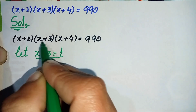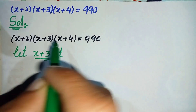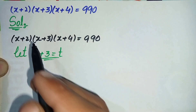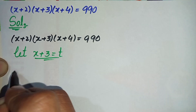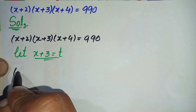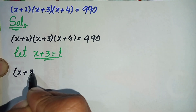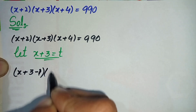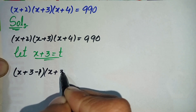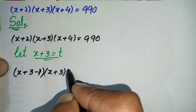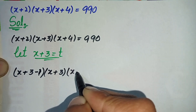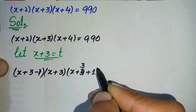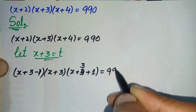Before replacing x+3 with t, I'll do one more step. We can write x+2 as (x+3) - 1, because 3-1 = 2. And x+3 remains the same. We can write x+4 as (x+3) + 1. So the equation becomes (x+3 - 1)(x+3)(x+3 + 1) = 990.